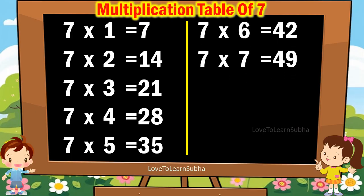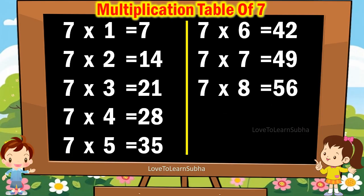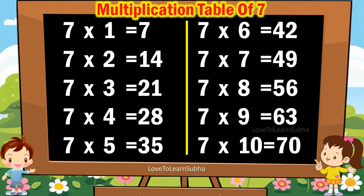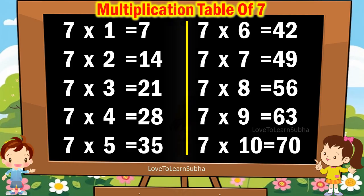7 7s are 49. 7 8s are 56. 7 9s are 63. 7 10s are 70.